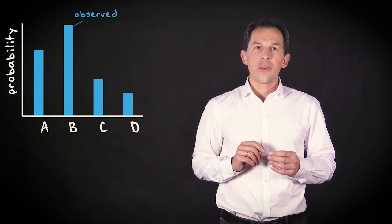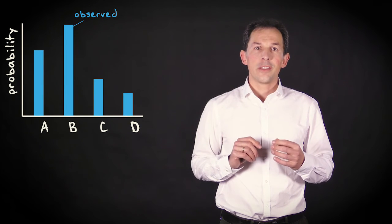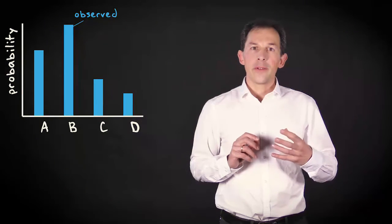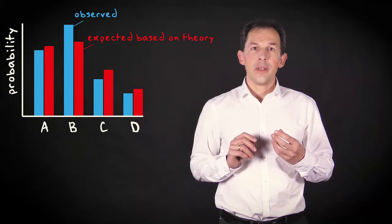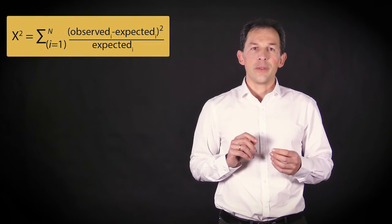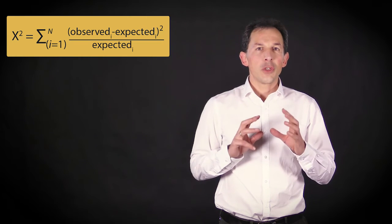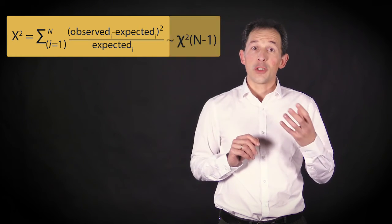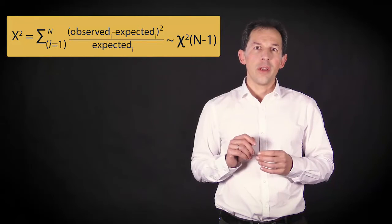I hope you understood the following from this video. If you have one categorical variable with n classes, and want to compare it to a theoretical distribution, the chi-squared test can be used. The chi-squared statistic then follows a chi-squared distribution with n-1 degrees of freedom.